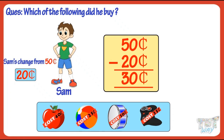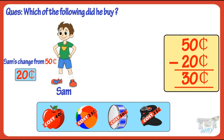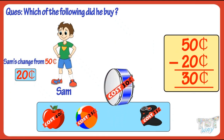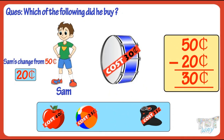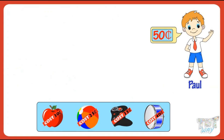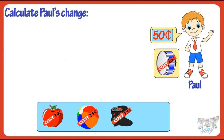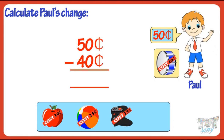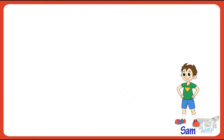Now see which of the following things cost 30 cents. The toy drum costs 30 cents, so Sam bought the drum! Now let's take another example. Paul goes shopping with 50 cents and he buys a toy drum. Calculate his change by subtracting the amount spent from the total money Paul had. Paul's change would be 10 cents.